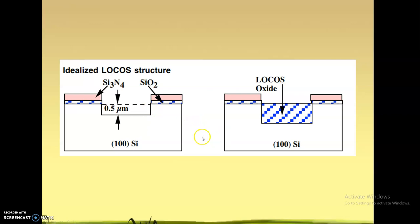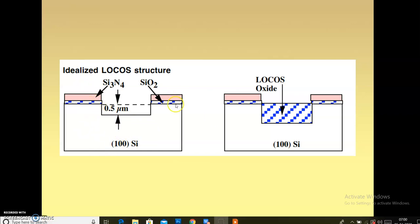We can perform LOCOS in two ways. In one approach — semi-recessed — you etch away a portion of the silicon, specifically half the thickness of the oxide you are going to grow. After field oxide is grown you can see in the second figure that the field oxide grown is also known as LOCOS oxide.